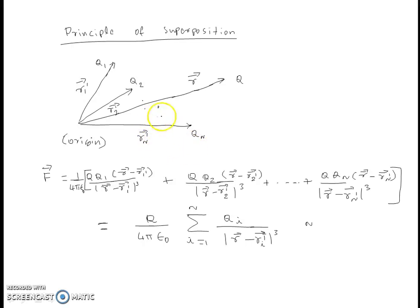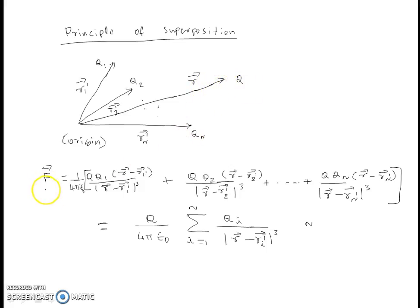Suppose we have a number of charges Q1, Q2, up to Qn, and the position vectors of these charges are given by R1 prime, R2 prime, up to Rn prime. If Q is a test charge at position vector R, then the force acting on charge Q is given by the vector sum of the forces acting on Q due to the individual charges Q1, Q2, up to Qn, as given in the expression.